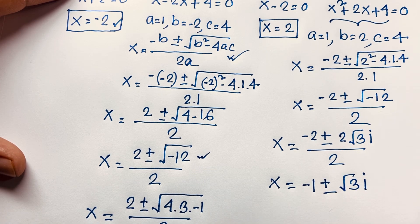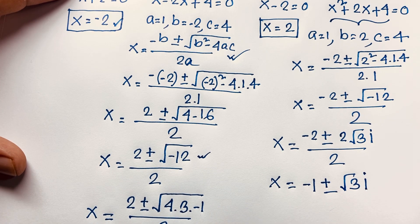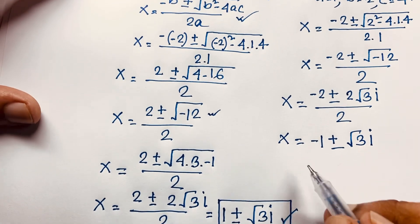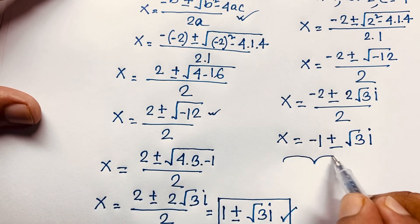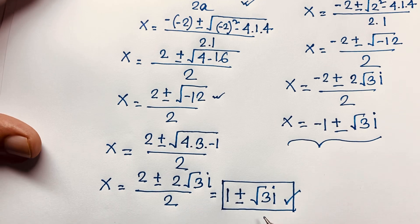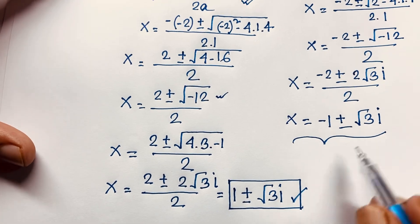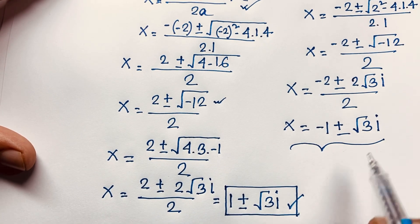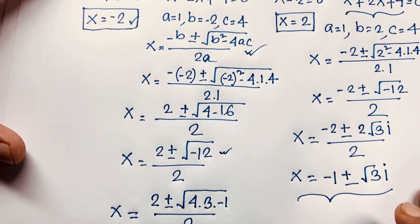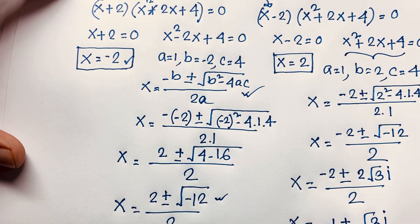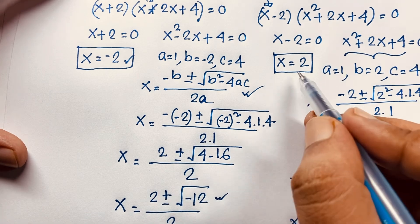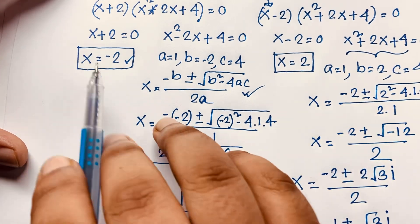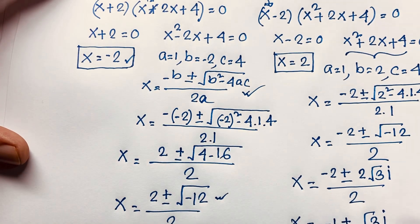In total, we find 6 solutions: two solutions from each factored quadratic (4 complex number solutions in all), and our two real solutions: x = 2 and x = −2.